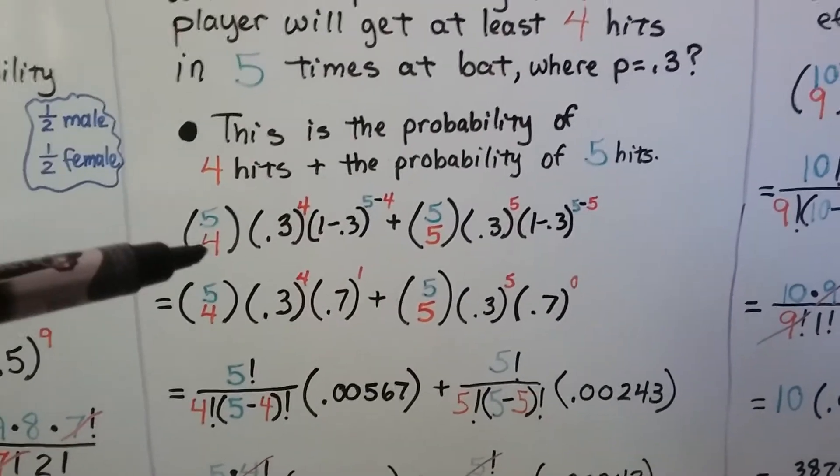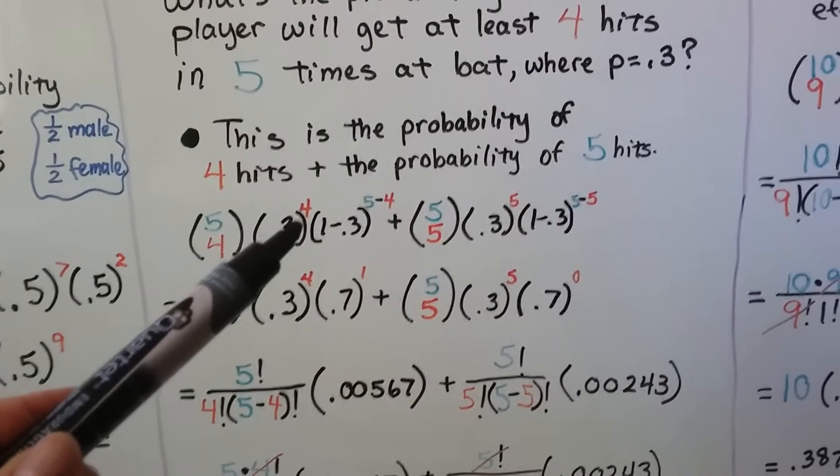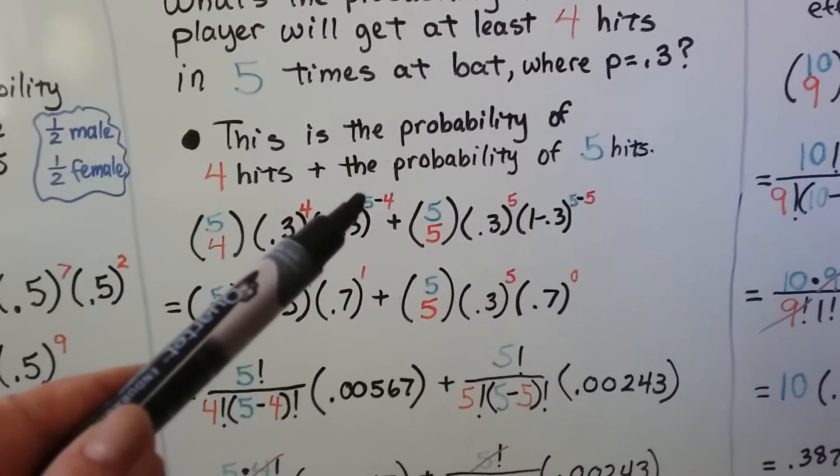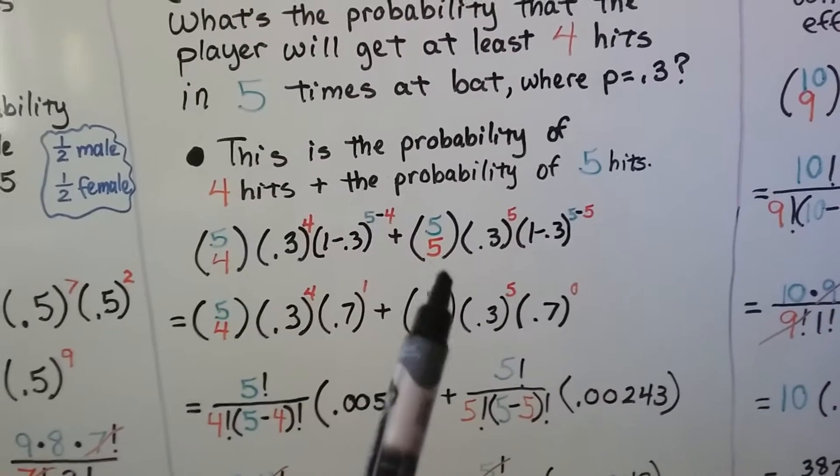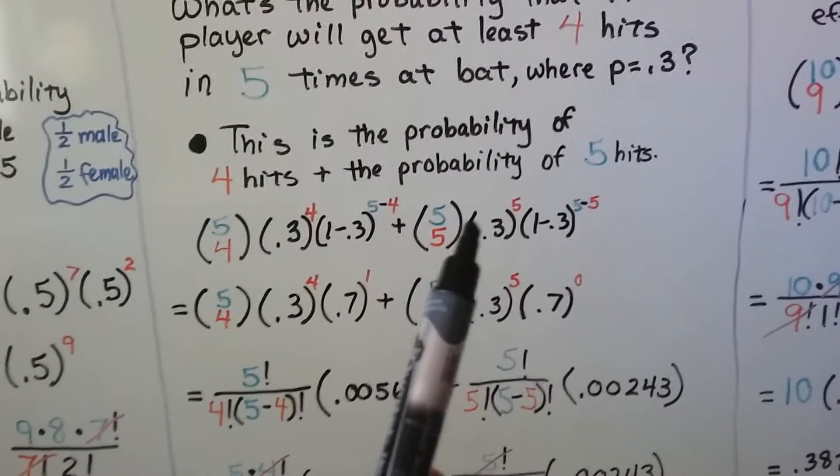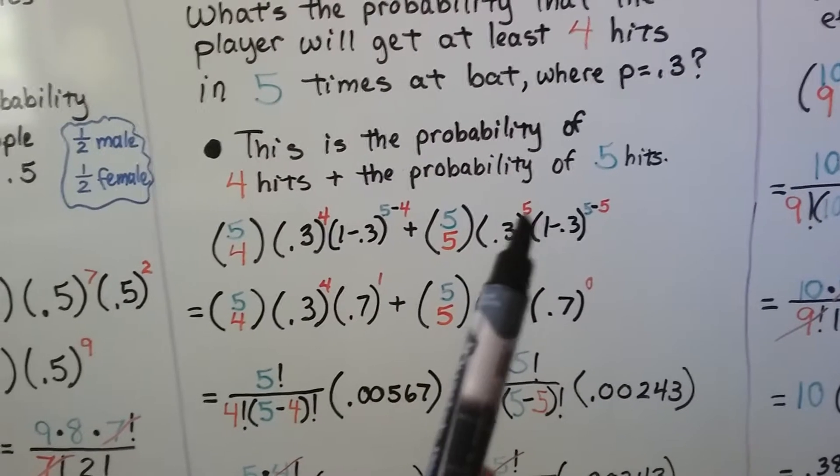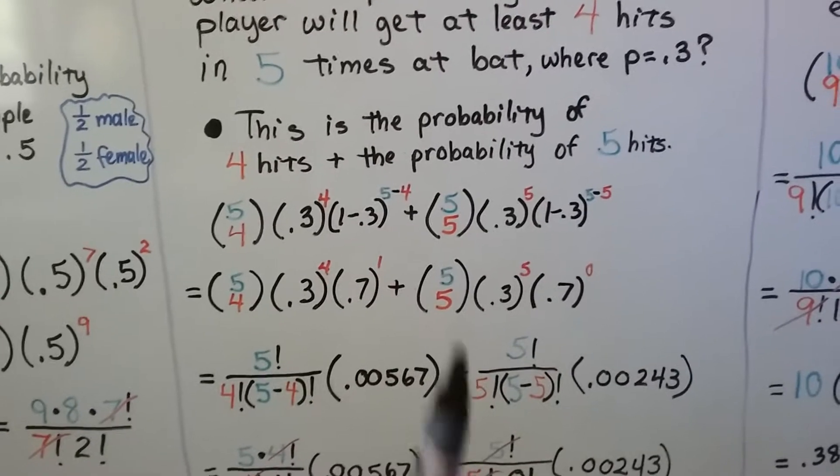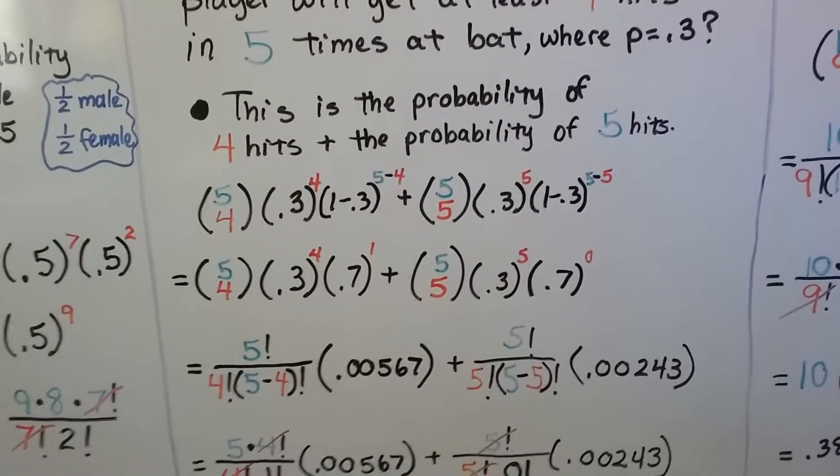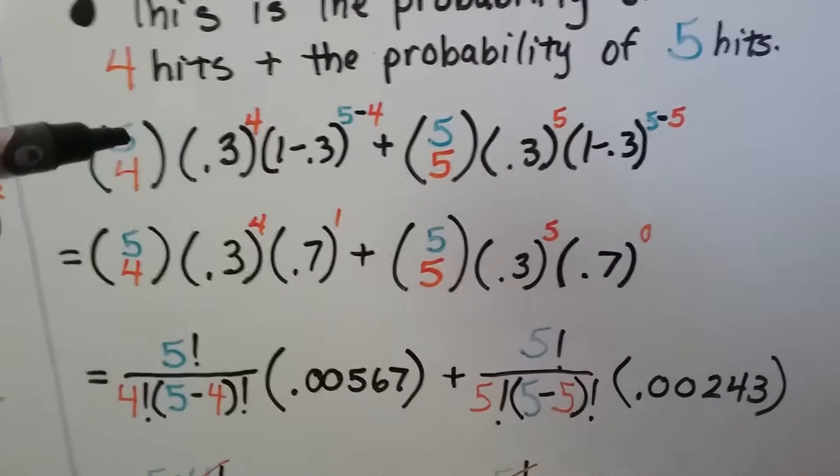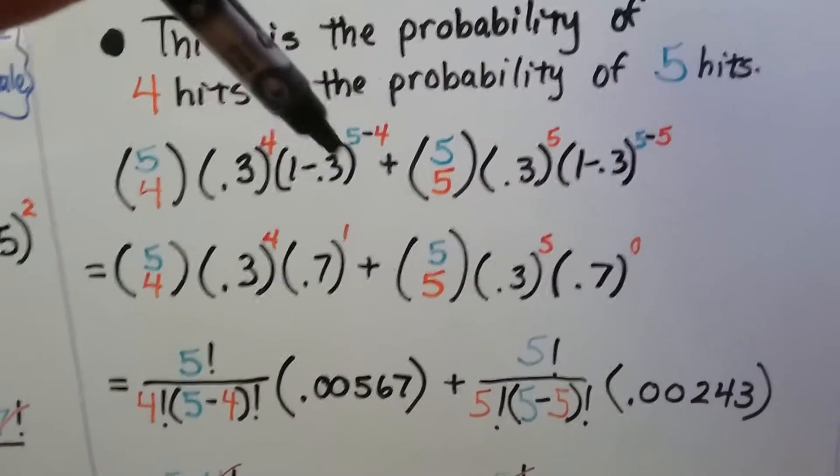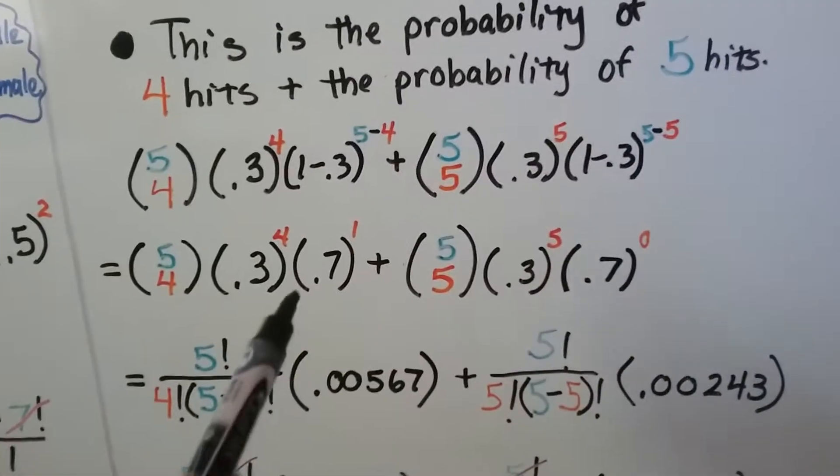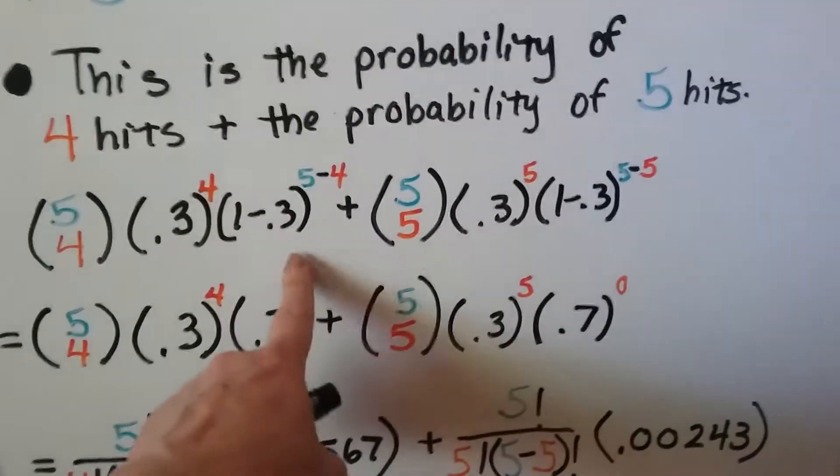So we're going to do five choose four with the p to the rth power times one minus 0.3 to the n minus rth power. Then we're going to do five choose five on this side times the p to the rth power times one minus p to the n minus rth. So we have an addition sign in the middle here. To simplify this, one minus 0.3 is going to give us 0.7 to the first power. So it's just going to be 0.7.